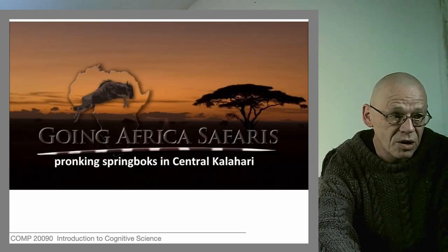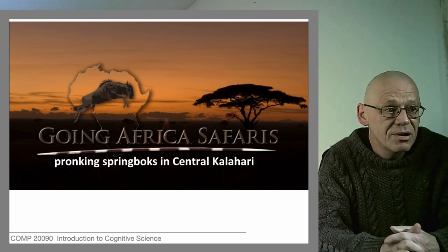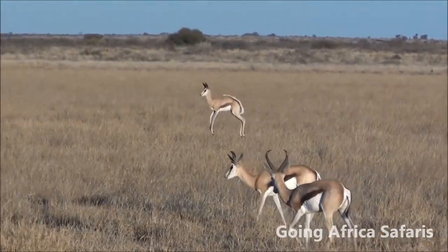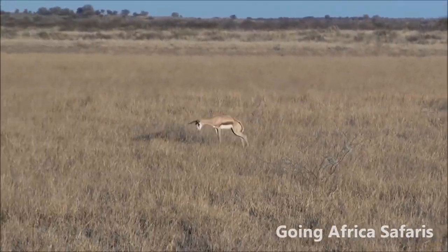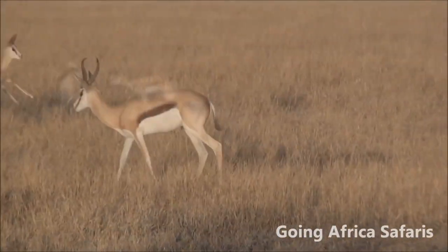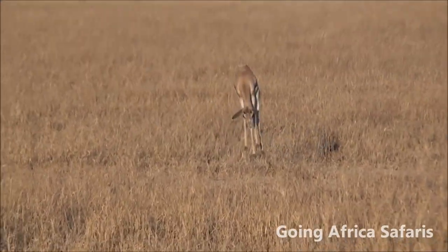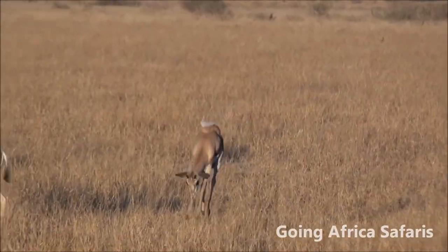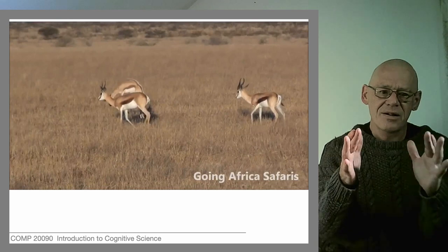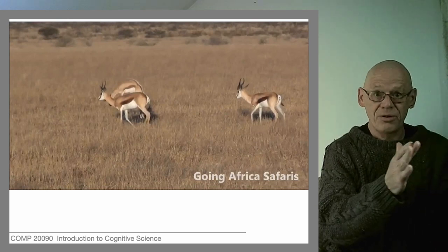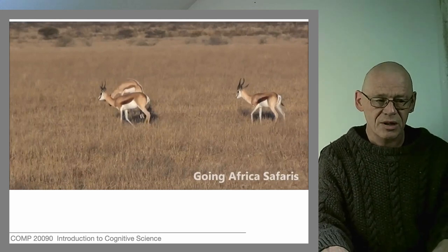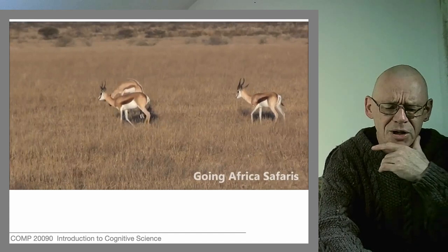One gait that the horse doesn't have is the pronk — let's have a look. That gait has all four legs in phase: all four legs are going through their cycle at the same time. All other gaits will have different phase relationships among the legs.